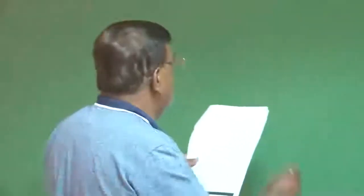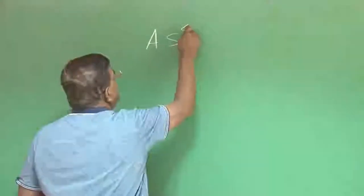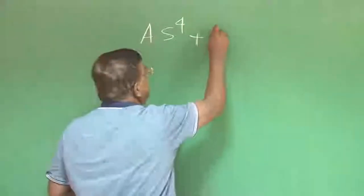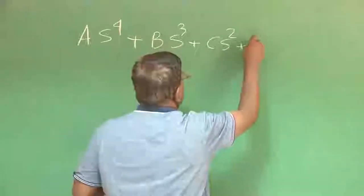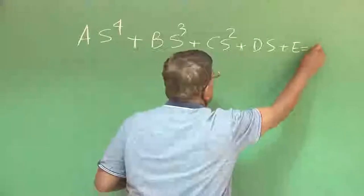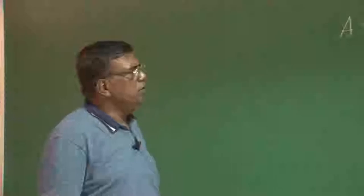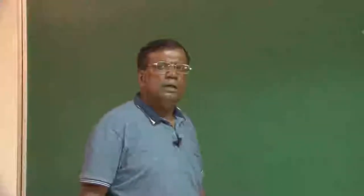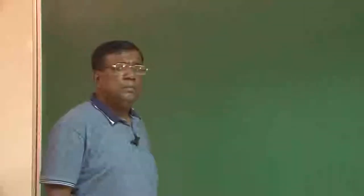We recall that we developed a characteristic equation of the form A·s⁴ + B·s³ + C·s² + D·s + E = 0. The coefficients A, B, C, D, E can be evaluated once we know the aerodynamic and inertia characteristics of the airplane using the known expressions.